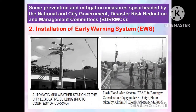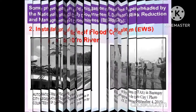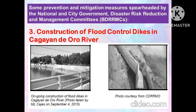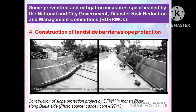Another prevention and mitigation measure spearheaded by the national and city government is the installation of an Early Warning System, or EWS. For example, the automatic mini weather station at the city legislative building and the flash flood alert system in Barangay Consolacion, Cagayan de Oro City. Another measure is the construction of flood control dikes along the Cagayan de Oro River. Another measure is the construction of landslide barriers, or slope protection.